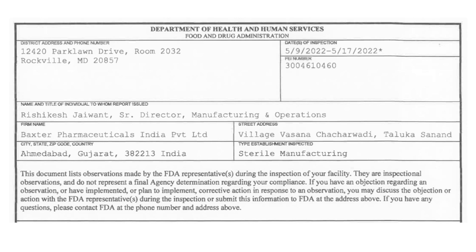So these were the seven observations issued by USFDA to Baxter Pharma's Ahmedabad injectable facility. There are many examples quoted by the auditors in Form 483 against each observation — I have covered a few of them. If you want more details, you can find the link in the description or visit the USFDA website to download Form 483. If you don't know how to download Form 483 from the USFDA website, there's also a link in the description for that. Hope you learned something new today — bye and happy learning.